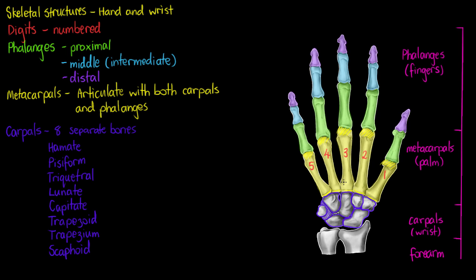We'll just number them and name them one more time so we remember. We have our hamate, pisiform, triquetral, lunate, capitate, trapezoid, trapezium, and scaphoid.